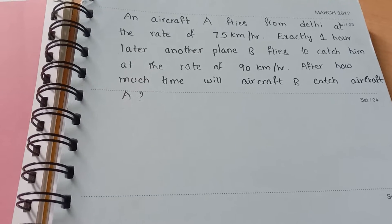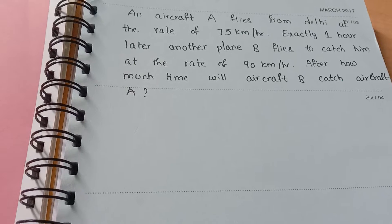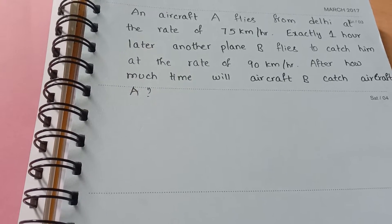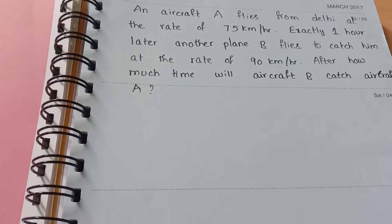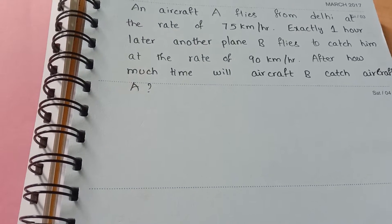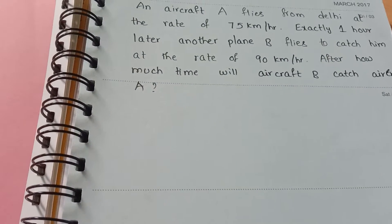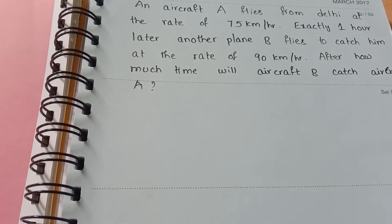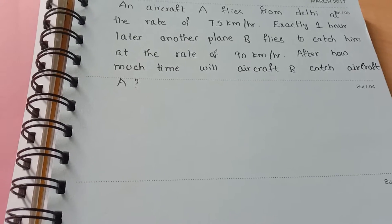An aircraft A flies from Delhi at the rate of 75 km per hour. Exactly one hour later, another plane B flies to catch him at the rate of 90 km per hour. After how much time will aircraft B catch aircraft A?